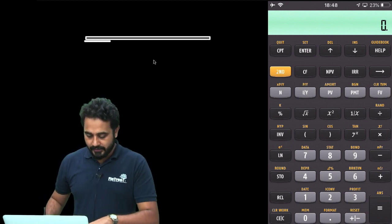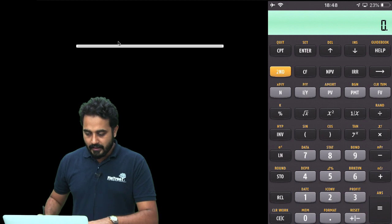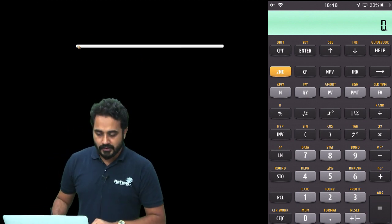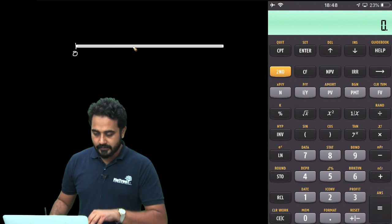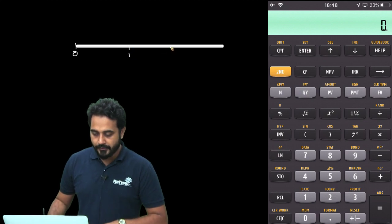So, imagine a situation like this. Let us say we have a timeline here. Now, we are receiving different stream of cash flows. So, let us say this is time 0, this is time 1, time 2, time 3 and time 4.